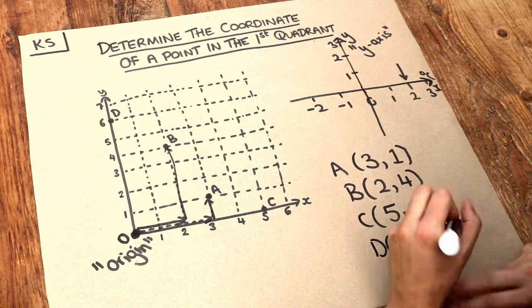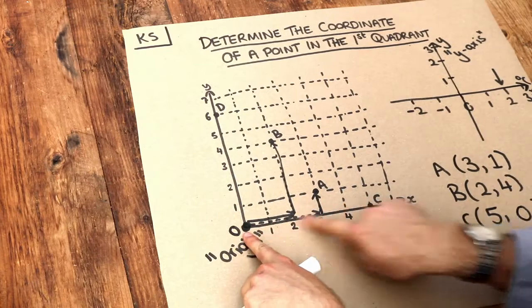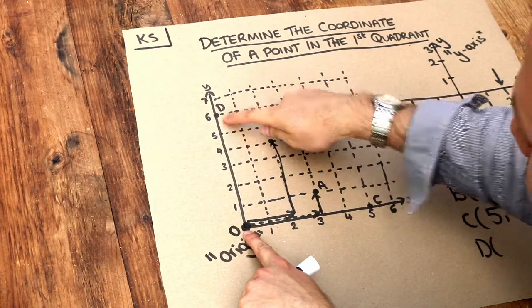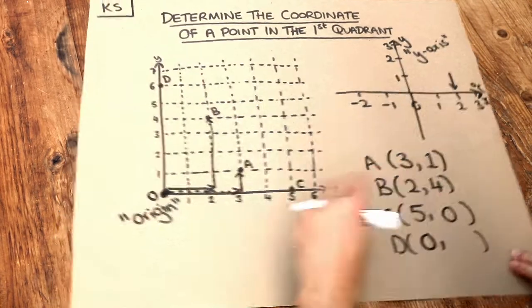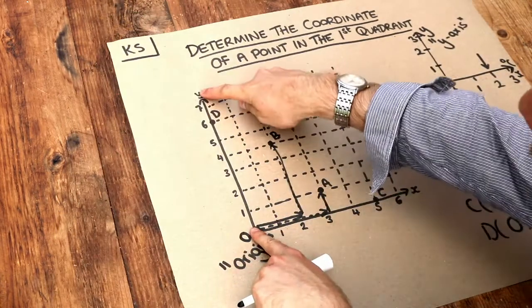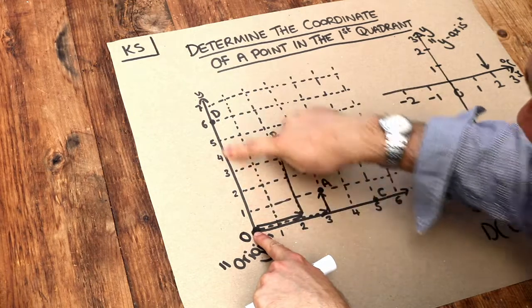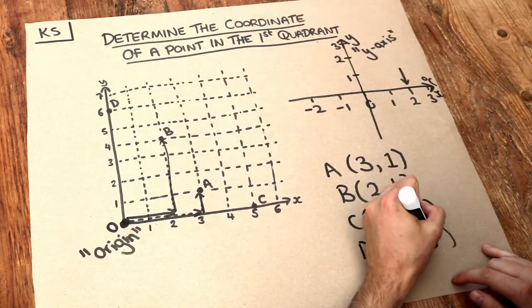And lastly D. How far do we have to go along the x-axis before we're directly under D? Well we don't have to move at all, so that's going to be zero. But we do have to move up the y-axis. So we have to go up six and that's going to be this value here.